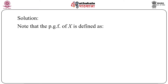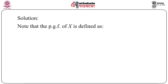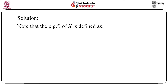We start with the definition of probability generating function. We assume the random variable is non-negative. So P(s) equals summation k equals zero to infinity of p_k times s to the power k, which is actually the expectation of s to the power k, where p_k is the probability P(X = k), for k = 0, 1, and so on. This is how we define the probability generating function of X.